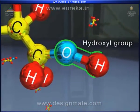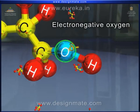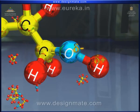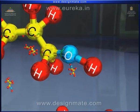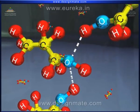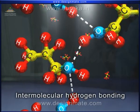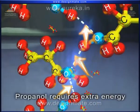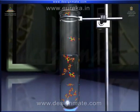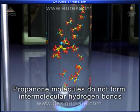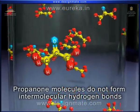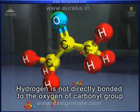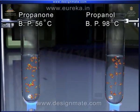This is because the hydroxyl group in propanol has an electronegative oxygen atom and a positively charged hydrogen atom. The electronegative oxygen atom of one molecule is attracted by the positively charged hydrogen atom of another molecule, resulting in intermolecular hydrogen bonding. Due to this additional force of attraction, propanol molecules require extra energy to get converted from liquid to vapor form. On the other hand, propanone molecules do not form such intermolecular hydrogen bonds among themselves, as hydrogen is not directly bonded to the oxygen atom of the carbonyl group. Hence, the boiling point of propanol is higher than propanone.